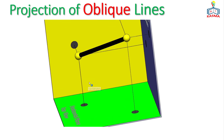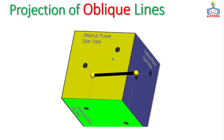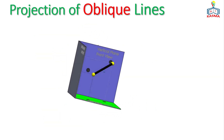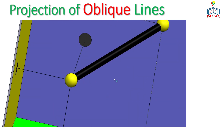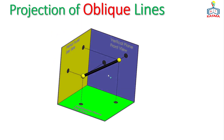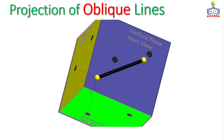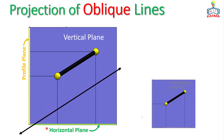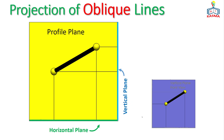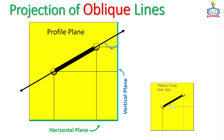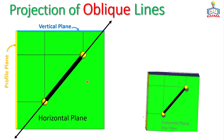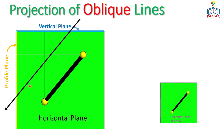Here is an animation to help understand oblique lines. You can see the location of the oblique line placed on the standard coordinate system. When viewed from the front, the line appears inclined to the horizontal plane. Rotating to the side view, the line also has some inclination with respect to the horizontal plane. Looking from the top, it appears inclined to the profile plane as well.